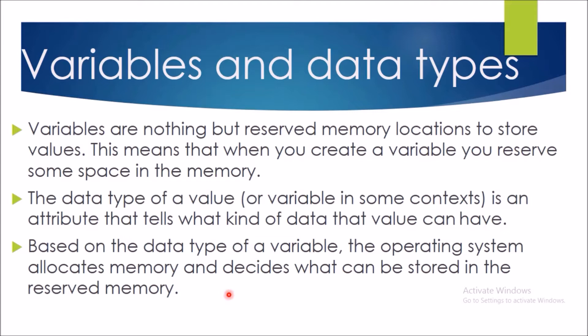Based on a data type of a variable, the operating system allocates and decides what can be stored in the reserve memory. So, finally, if I summarize, variable is nothing but the reserve memory location. And if we have declared any variable, it means we have declared a memory space and in that memory space, we are going to store any literal. And if a data type is considered, then the data type is nothing but it is a type of data which is going to be stored inside any variable. And if we declare any type of variable, the operating system allocates this memory and decides what type of data is going to be stored on that particular variable. This is all about the variables.